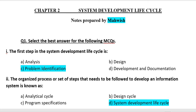First of all we have MCQs. Question one: The first step in the System Development Life Cycle is — (A) Analysis, (B) Design, (C) Problem Identification, (D) Development and Documentation. The correct answer is Option C, that is Problem Identification.